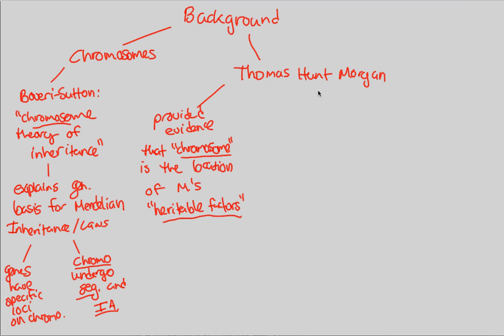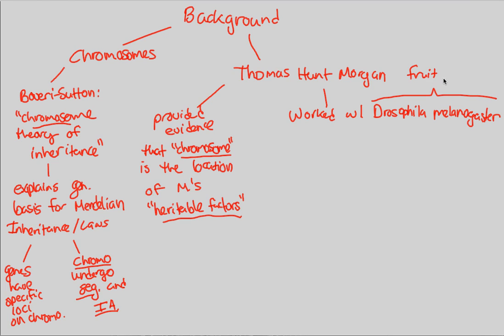Morgan worked with a very special organism. Just like how Mendel had a very advantageous model organism — the pea plant — Thomas Hunt Morgan is associated directly with Drosophila melanogaster, the common fruit fly. Fruit flies have given us an incredible amount of information in regards to genetics and non-Mendelian genetics specifically, because they have many different advantages in terms of lab capabilities.